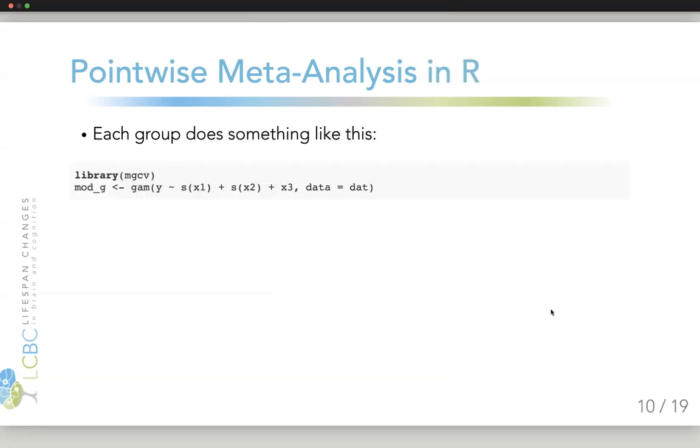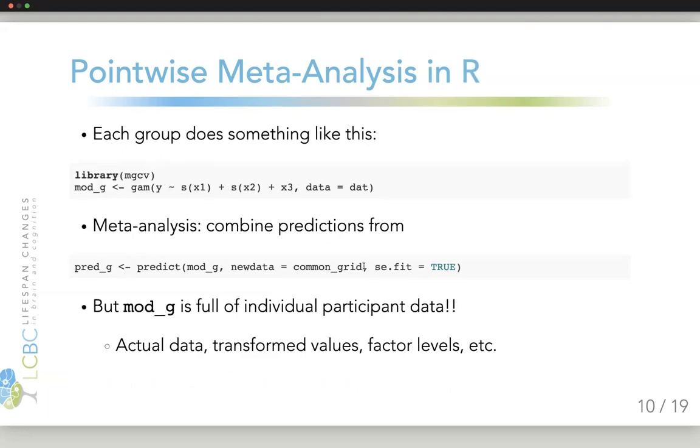The way to do this in R would be that each group fits a model. MGCV is the most used package for generalized additive models, so they would set up a model at group G using their data, and then they would send this to someone who would do the meta-analysis, which would then predict from the model G at some common grid of values which are common to all the studies, which we define. That's where we want to see our predicted estimates, and then we can combine this.